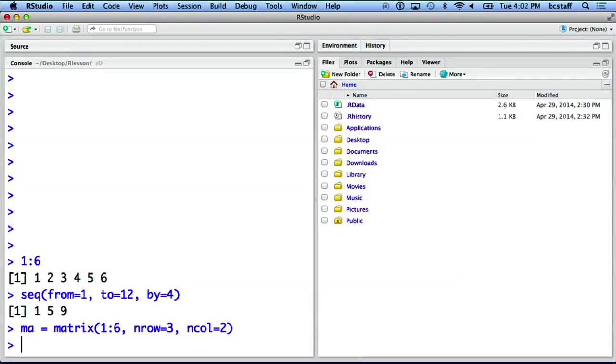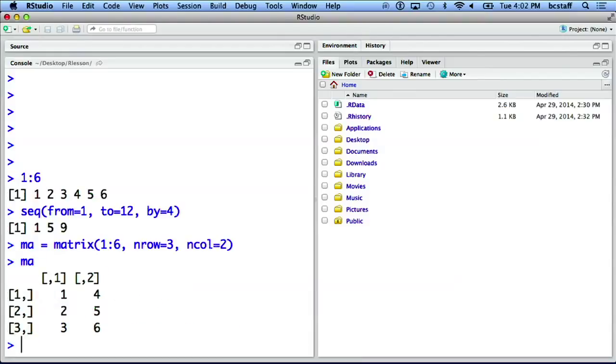We can look at ma, and let's create another matrix, mb, with a number of rows being three and number of columns being one.